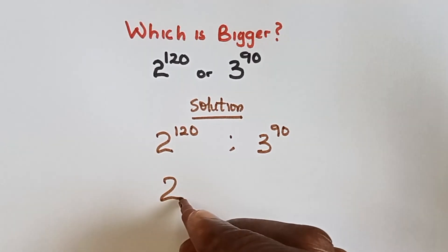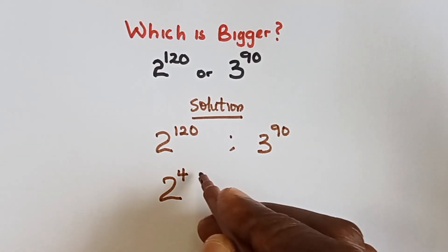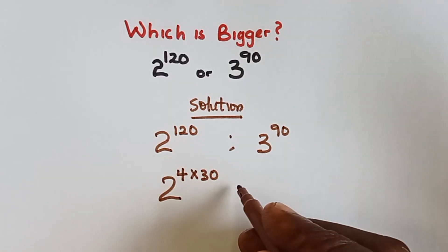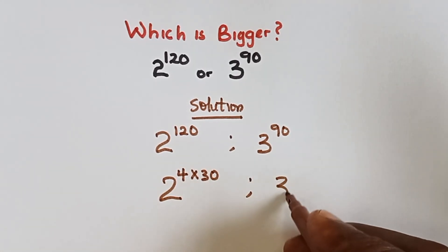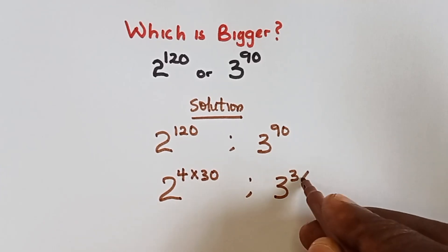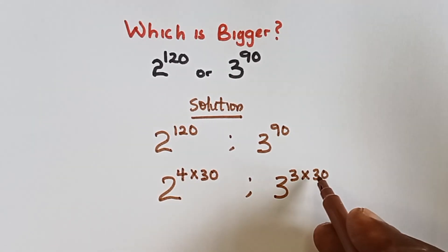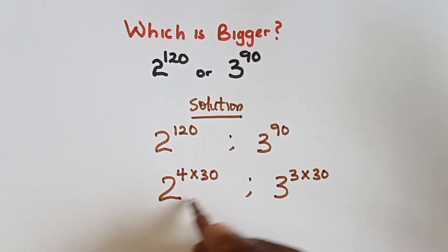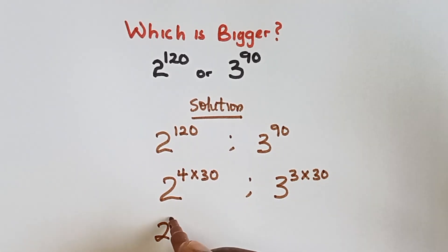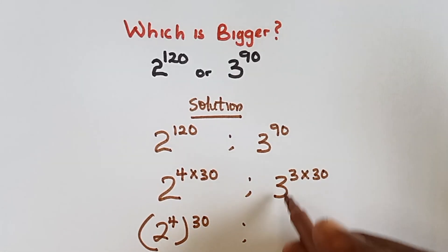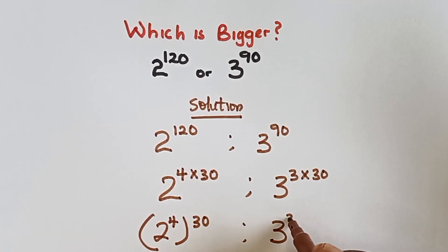What we do is we have 2 raised power 4 multiplied by 30 to give us 120 and also here we have 3 multiplied by 30 to give us 90. So we're having 30 and 30 as one of the powers and you can also write this as 2 raised power 4 then multiply by the 30 and also this can be written as 3 raised power 3 multiplied by the 30.